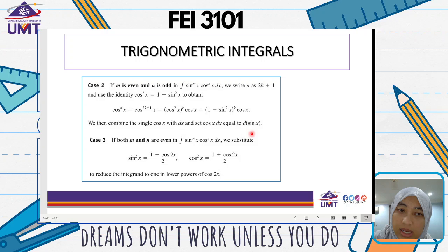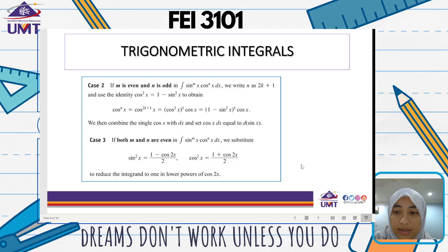Case 3: if both m and n are even, in the integration of sine to the power of m times cos to the power of n dx, we substitute using the identities: sine squared x equals 1 minus cos 2x over 2, and cos squared x equals 1 plus cos 2x over 2. These come from trigonometric identities. We do this to reduce the integral to one in lower powers of cos 2x.